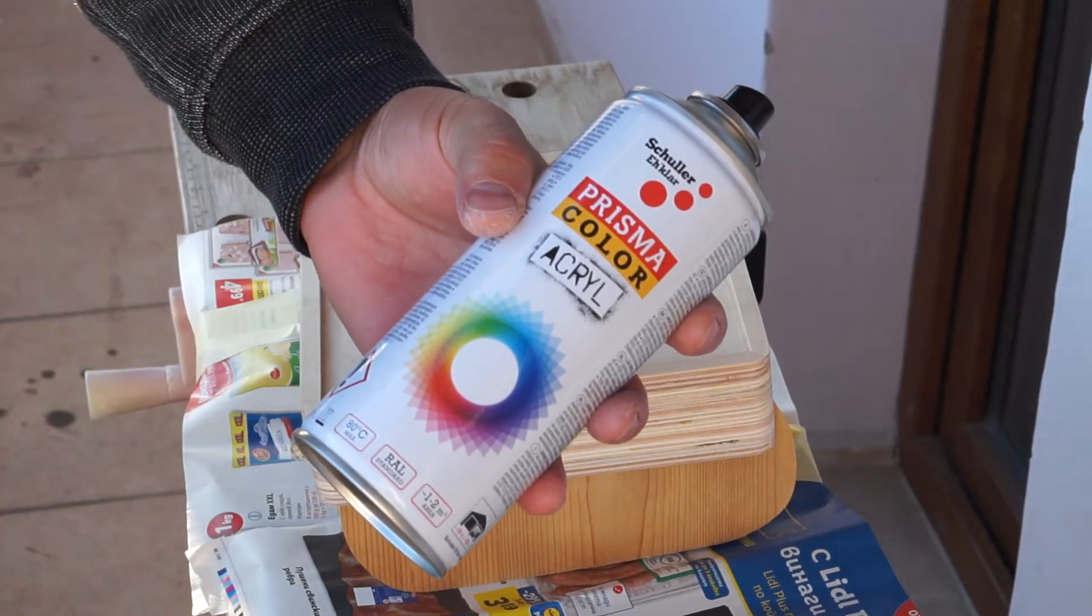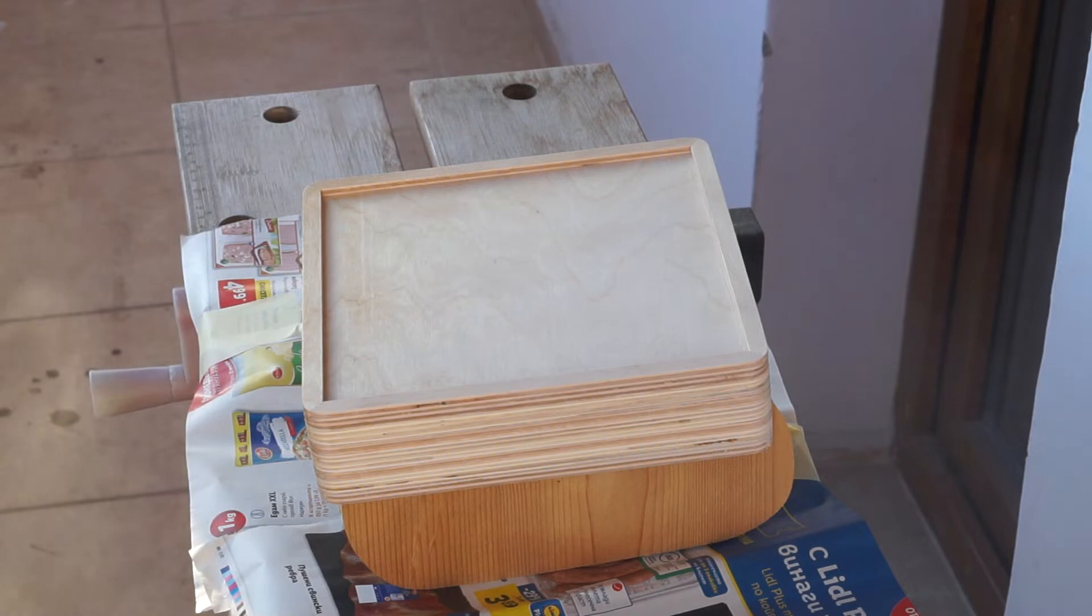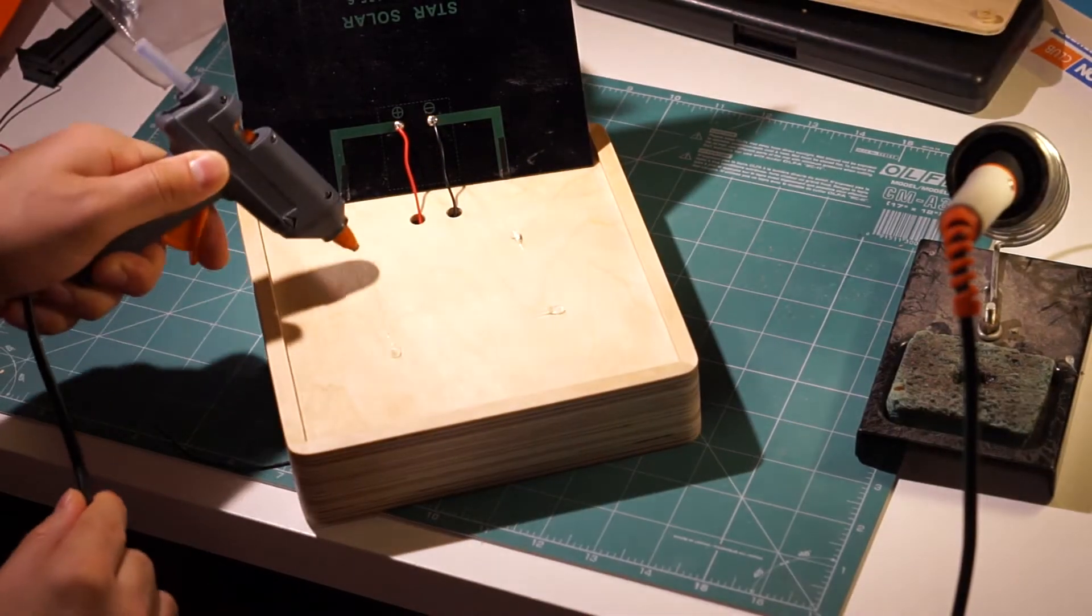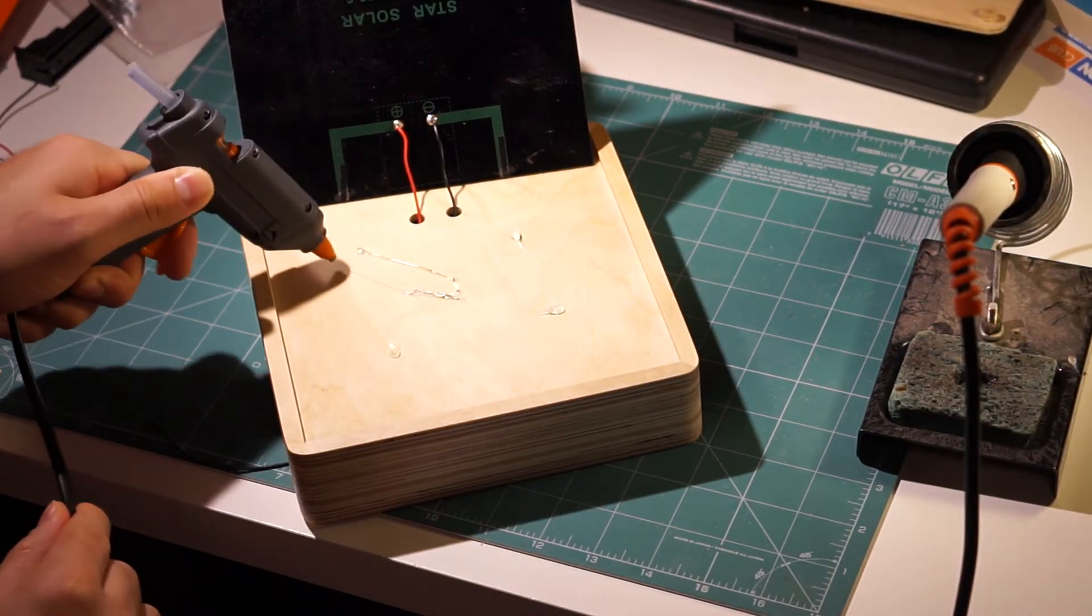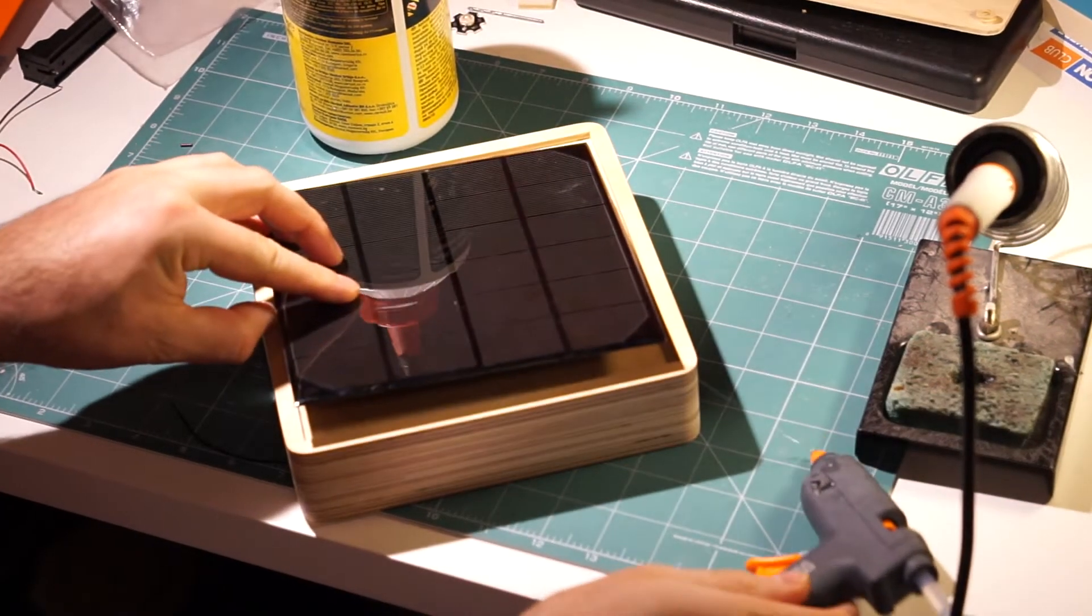Next, a few layers of spray lacquer for protection. After the enclosure was complete, I glued the solar cell in place using a few drops of hot glue.